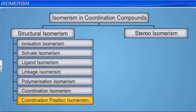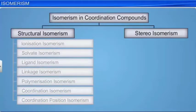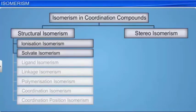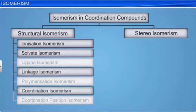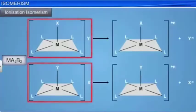Of these, we will discuss only ionization isomerism, solvate isomerism, linkage isomerism, and coordination isomerism in this module. Let us first discuss ionization isomerism. Compounds that have the same stoichiometric composition but yield different ions in a solution are called ionization isomers.